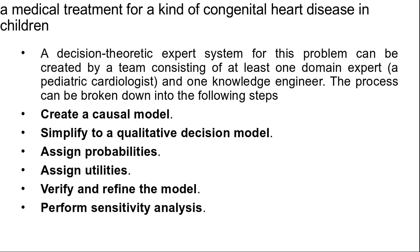Fourth, assign utilities. When there are a small number of possible outcomes, they can be enumerated and evaluated individually. We would create a scale from best to worst outcomes and give each a numeric value — for example, 0 for death and 1 for complete recovery — then place the other outcomes on this scale. This can be done by the expert, but it is better if patients can be involved, because different people have different preferences. If there are exponentially many outcomes, we need a way to combine them using a multi-attribute utility function. For example, we may say that the costs of various complications are additive.